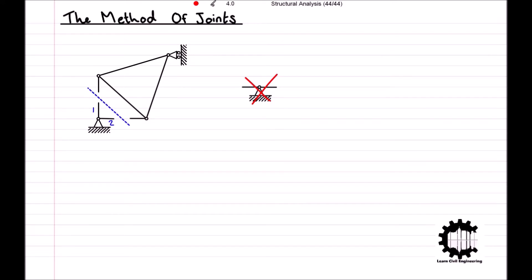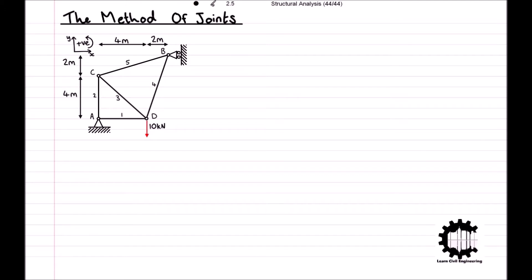To learn the method of joints we will consider this truss structure. The structure is supported by a hinge support at node A and a roller support at node B. There is a vertical concentrated load of 10 kN applied to the structure at node D in a downwards direction.